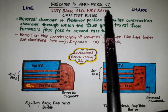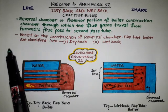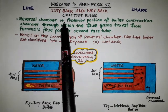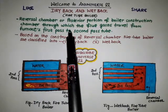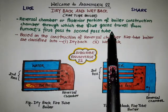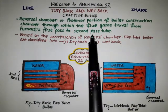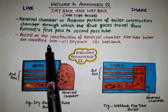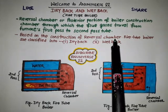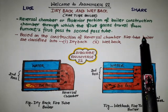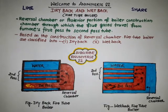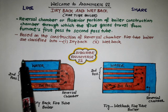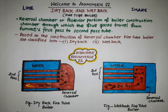The reversible chamber, or posterior portion of the boiler construction chamber, is through which the flue gases travel from the furnace first pass to second pass. Based on the construction of this reversible chamber, fire tube boilers are classified into dry back and wet back boilers. Firstly we will discuss about the dry back fire tube boiler.